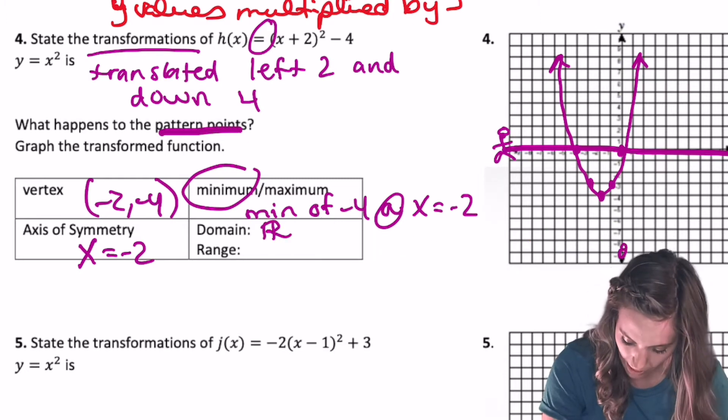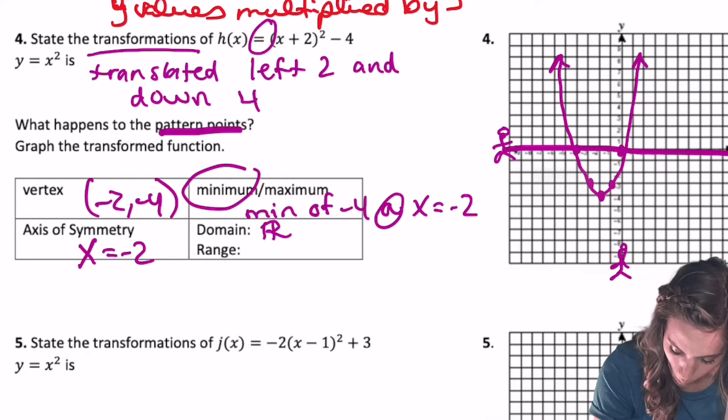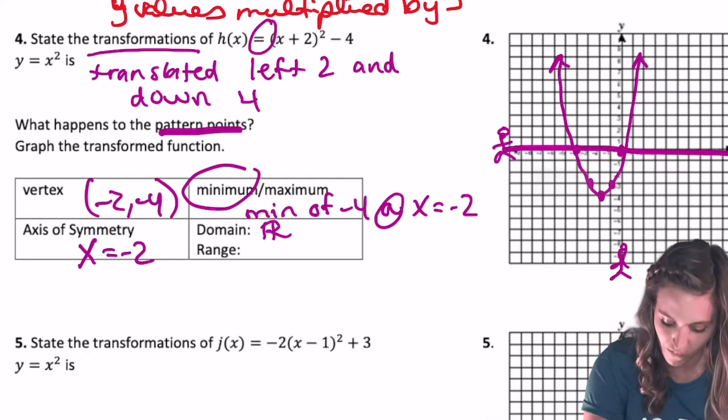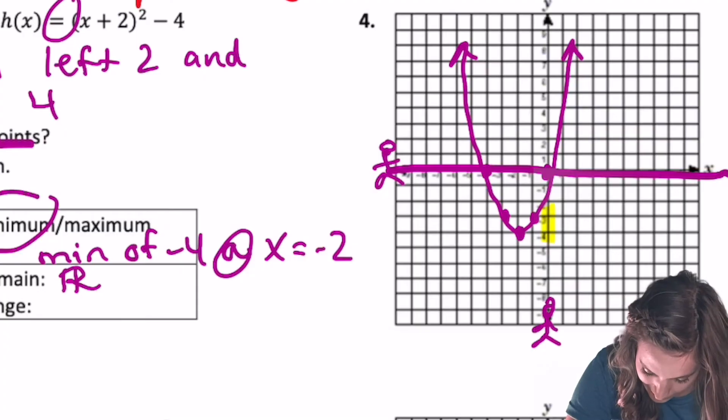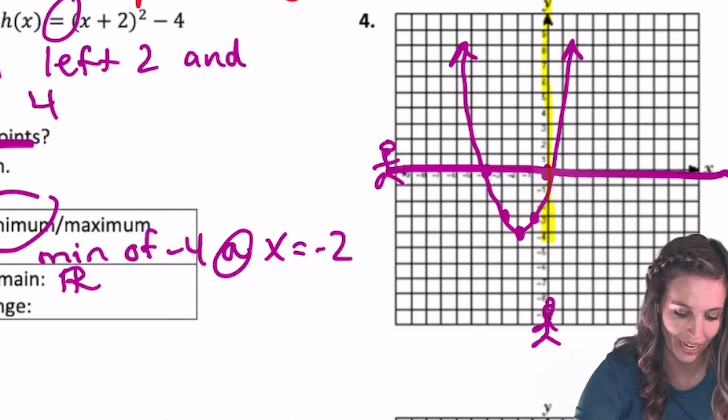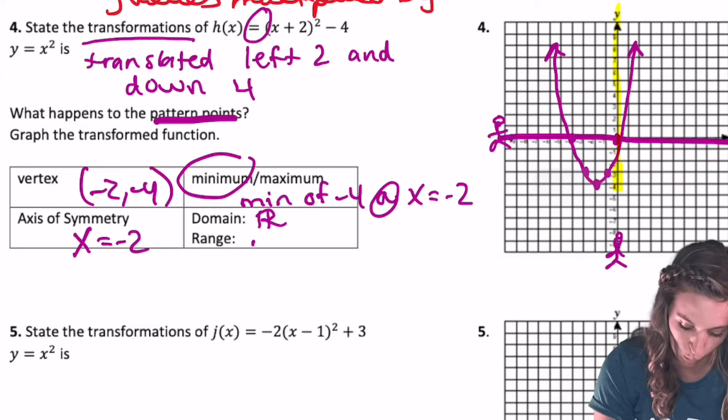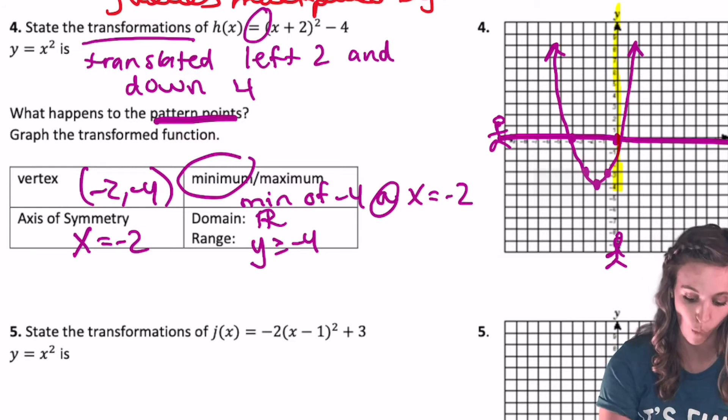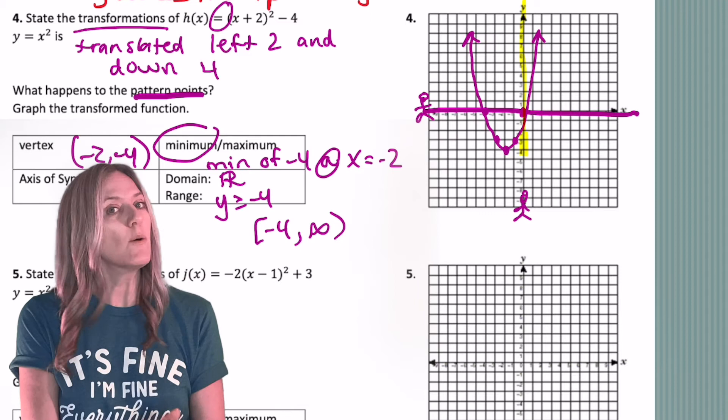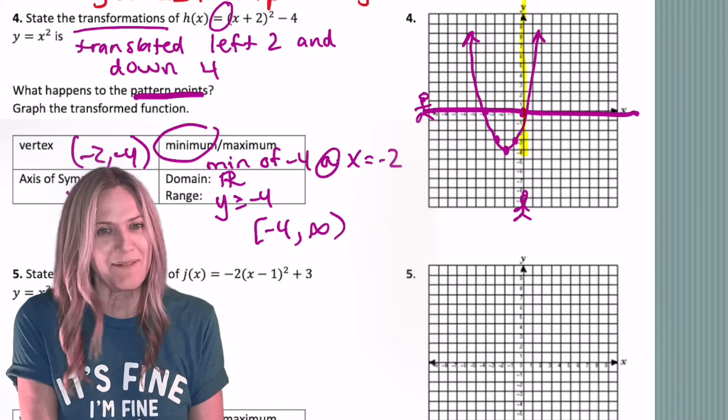And then my range, if I put my little stick figure on the y-axis now, he's going to climb up the y-axis looking left to right. When's he going to very first see the graph? Right here at negative 4, and then everywhere after that. So I can say that my range is everything greater than or equal to negative 4. So y is greater than or equal to negative 4. That's a mighty fine parabola. That's a very fine parabola.